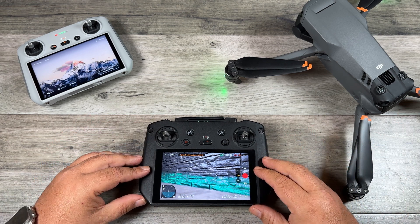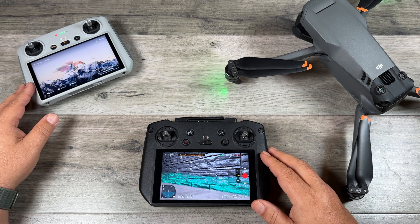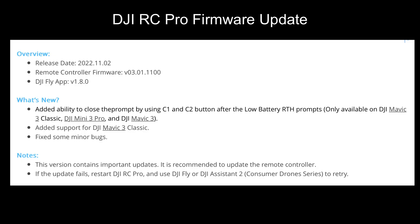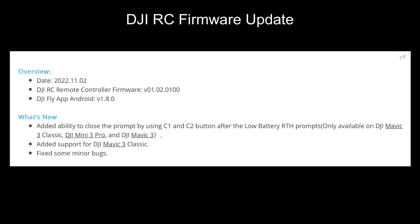There was also a firmware update for the RC Pro and the DJI RC, as both are compatible with the Mavic 3. The RC Pro has been updated to version 03.01.1100. The release notes show it adds the ability to close the prompt using the C1 and C2 buttons after the low battery return-to-home prompt — available for the Mavic 3 Classic, the Mini 3, and the original Mavic 3. The same update applies to the DJI RC, now on firmware version 01.02.01.00.